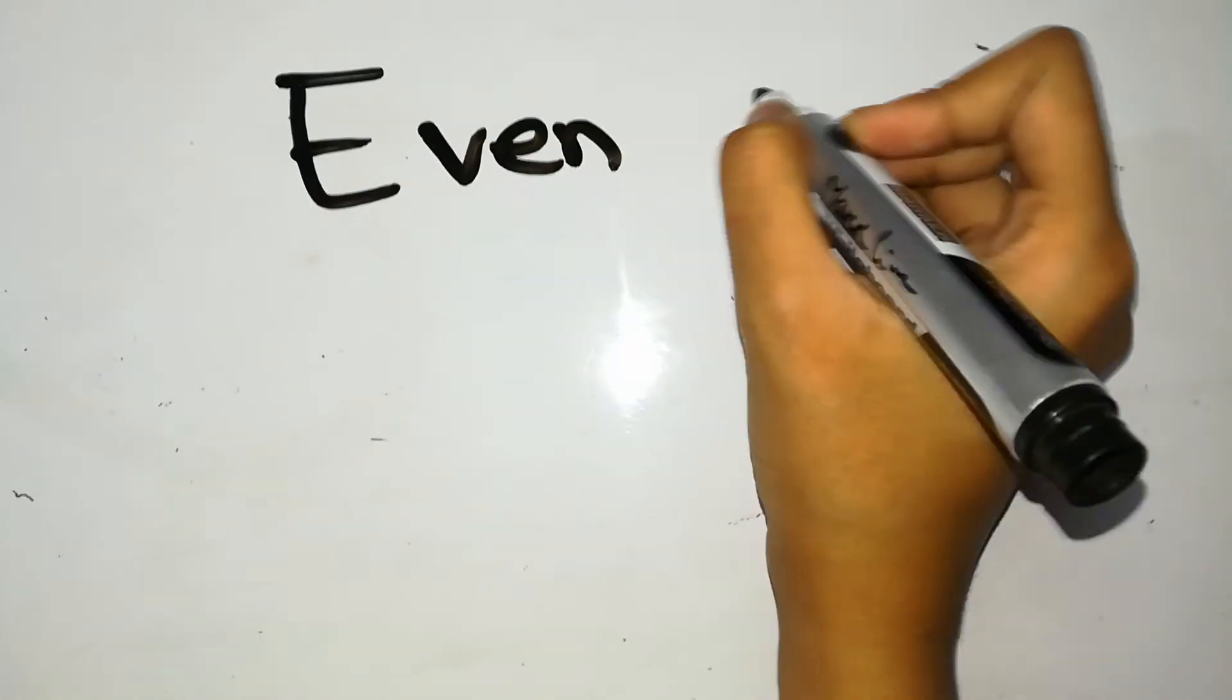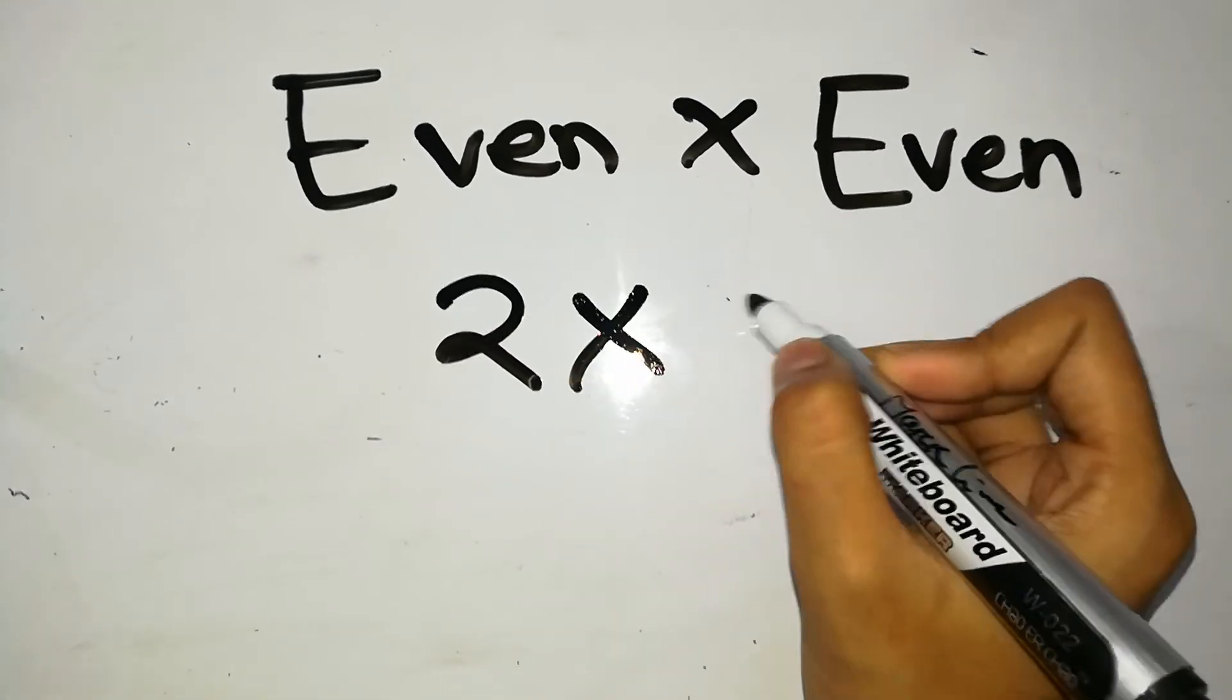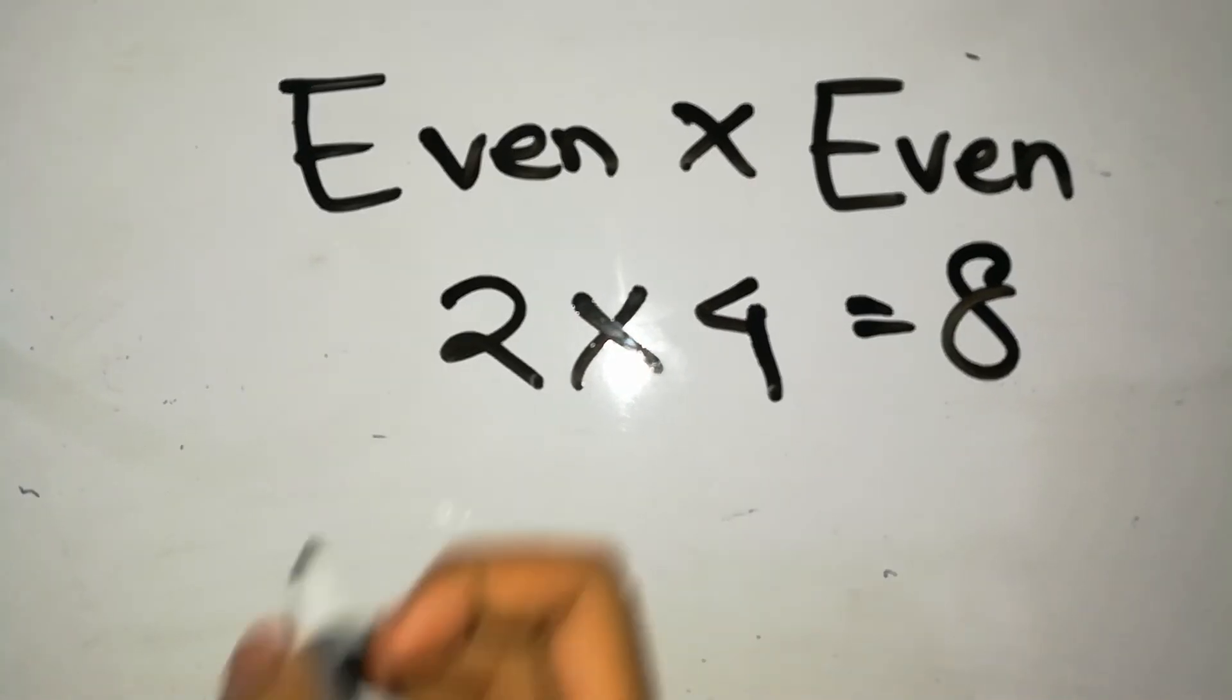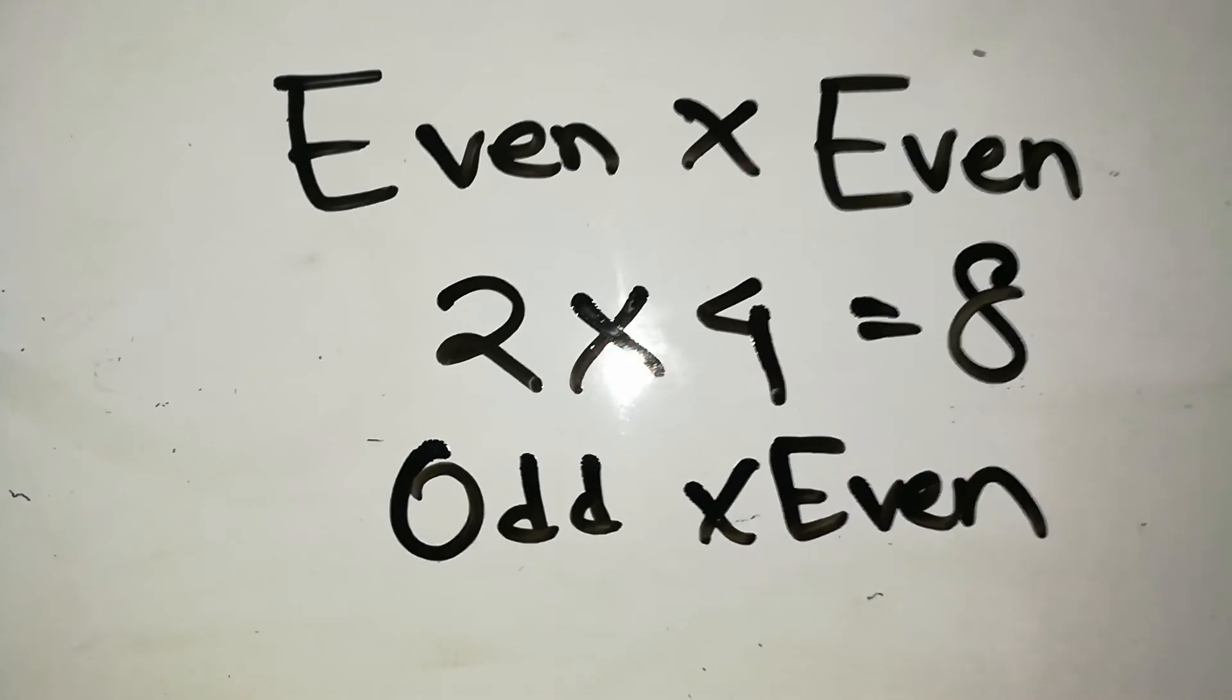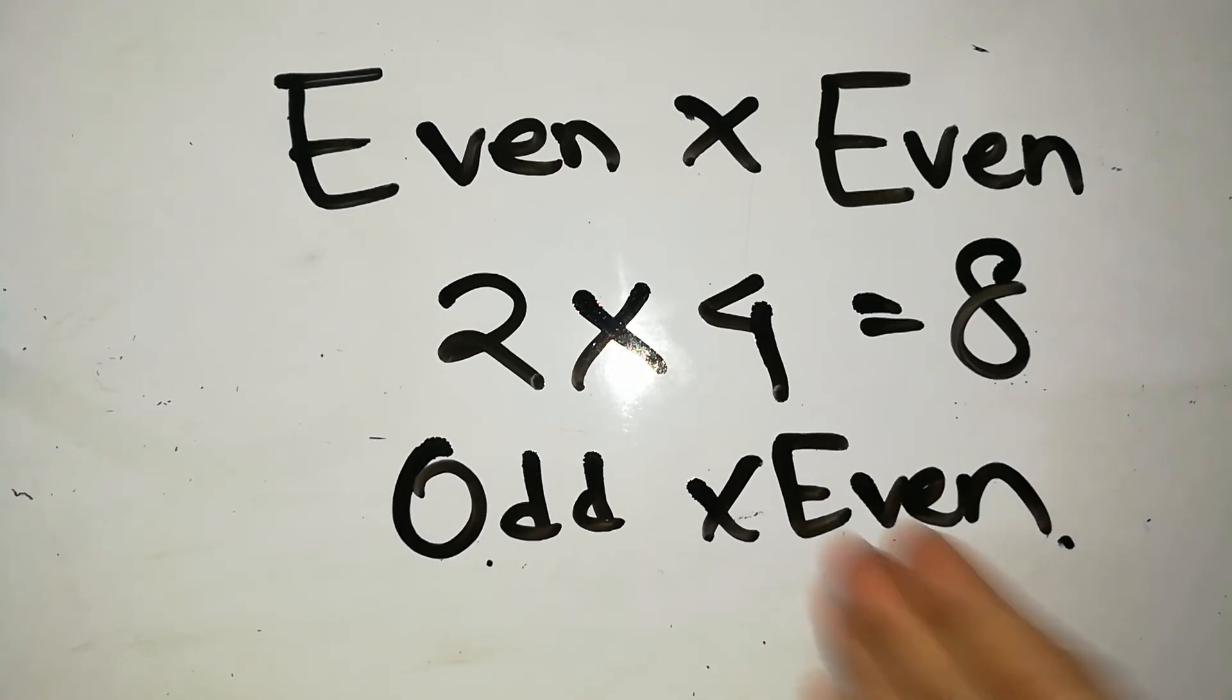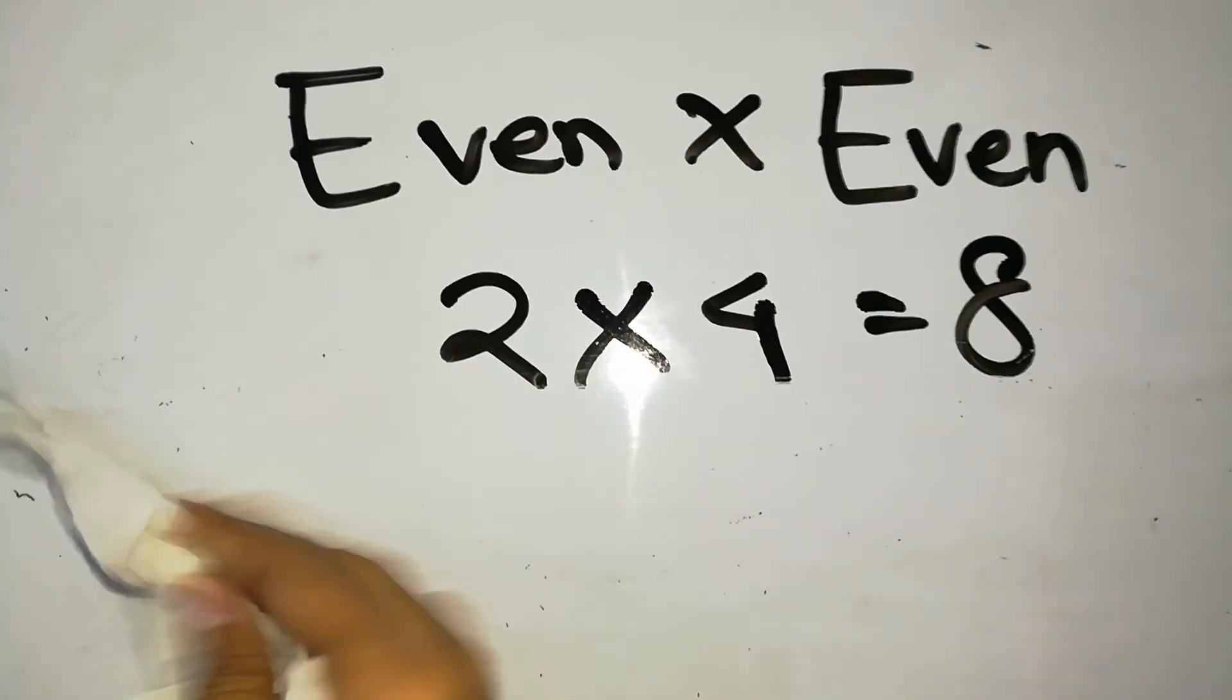This is very important: even into even - what do you get? Think whether even into even will be even or odd. For example, take the smallest even numbers: 2 into 4 is 8. 8 is an even number. Similarly, think about odd into even. Just think of the even number as 2 - any number multiplied by 2 turns out to be even. For example, 5 multiplied by 2 becomes 10, so even. You have to remember that even is like the magic number which turns every product into even.